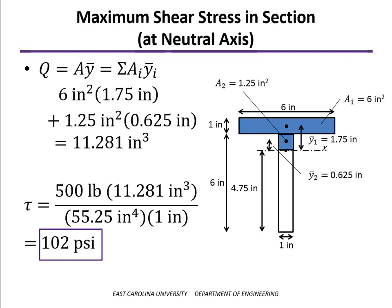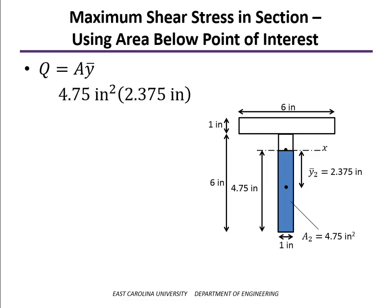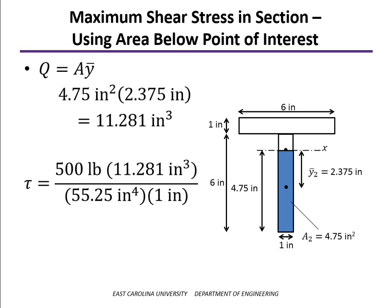We could also use the area below the neutral axis as an alternate approach. The single shaded area below is 4.75 square inches with ȳ = 2.375 inches. Multiplying these gives the same Q value as before, and the same calculation yields the same maximum shear stress of 102 psi at the neutral axis, confirming our result.